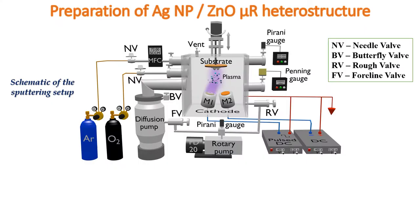Let's move on to the preparation of silver zinc oxide heterostructures. This is the schematic of the pulse DC magnetron sputtering setup installed in our laboratory. The process starts with cleaning of the chamber and mounting the appropriate sputtering targets onto the magnetrons and the substrates onto the substrate holder. Then the chamber is evacuated to a rough vacuum using the rotary pump and then to a high vacuum using the diffusion pump. After proper evacuation, argon gas is injected into the chamber using the needle valve. A high negative pulse DC is applied to the sputtering target, resulting in the creation of the argon plasma and the subsequent occurrence of sputtering.